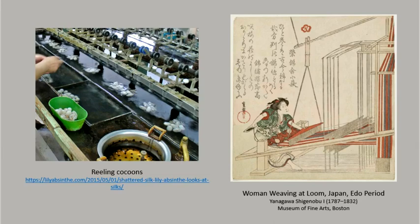Once the transformation is complete, the moth will eat its way through the cocoon and emerge, breaking the long filament strand. Therefore, when cultivating silk for textile production, the silkworms are killed using heat or steam before their metamorphosis is complete. The cocoon can then be soaked in hot water to soften the sericin and allow the fiber bundles to be unwound. Unbroken filaments pulled from cocoons can measure up to 3,000 feet in length. The sericin is removed using soap and water, a process called degumming, and the individual triangular filaments are separated. The silk filaments are then ready to be spun together to create consistently sized yarns, dyed, and woven into cloth.